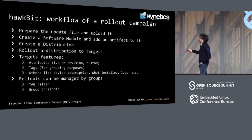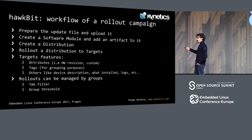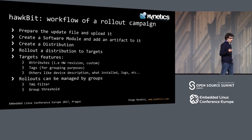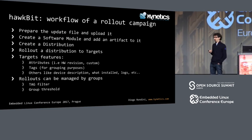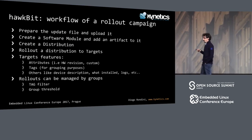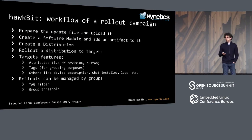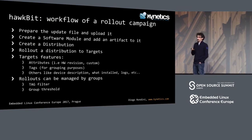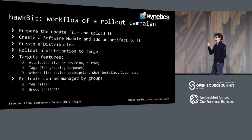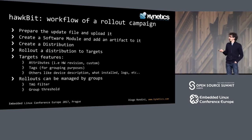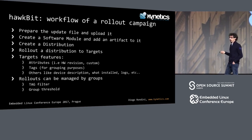Hawkbit is also very good at managing rollouts, dividing your devices into groups. If you want just 100 devices running beta test software and the other 10,000 running production software, you can apply the update just to those beta devices. You can divide by location or any grouping — there are several metadata you can manage in Hawkbit.